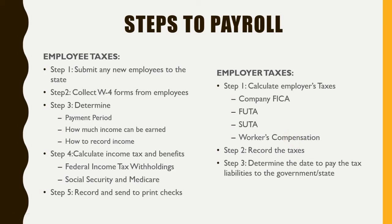Tomorrow we'll cover employer taxes. Once you've calculated each employee's total earnings, you complete your employer taxes. This includes company FICA — matching 100% of what the employee pays into social security and Medicare — as well as federal unemployment tax, possible state unemployment tax, and workers' compensation.